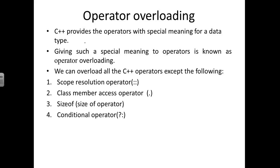In C++, different operators will have different meanings. Each operator will have its own special meaning for a data type. While giving such a special meaning to the operator, we call it operator overloading. The same operator at a different location will have a different meaning — it will be used for multiple purposes. Hence we call this concept operator overloading.